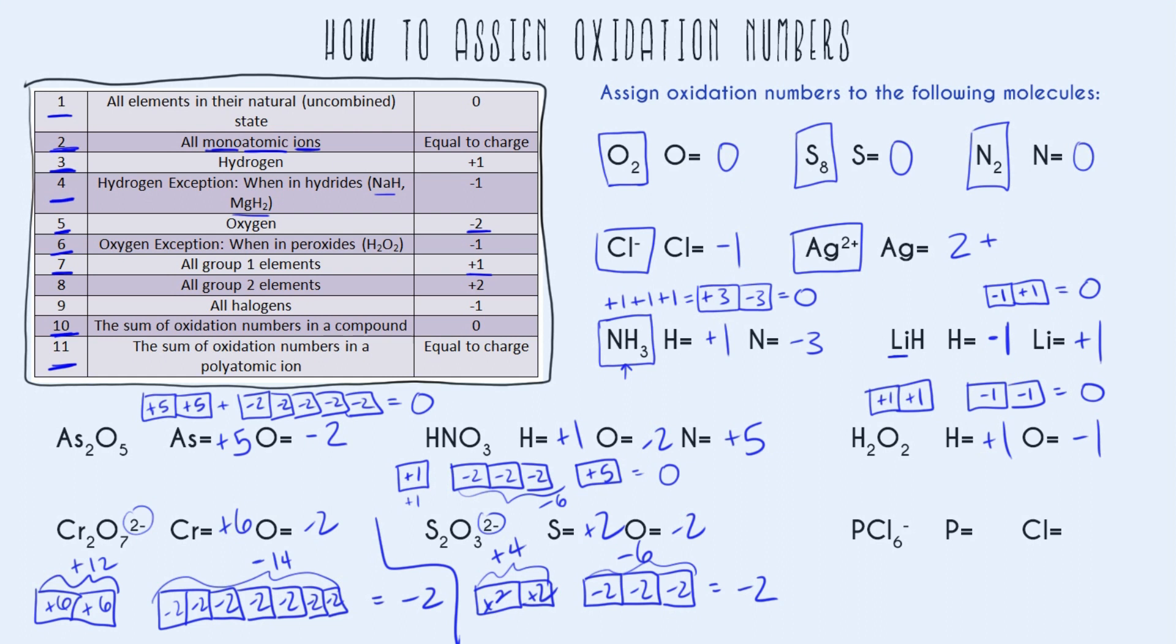And last, we are using rule number nine, which says all halogens are negative one. And besides that, it's the same as the other examples we've done. So we know our total is negative one from this negative sign right here. We're going to have one phosphorus, and then we're going to have six chlorines. Each chlorine is negative one, which makes us have a total charge of negative six for the chlorines. So the only thing that's going to cancel out is a plus five. So that's what phosphorus is.